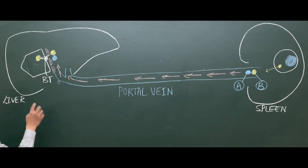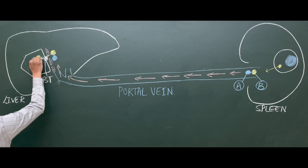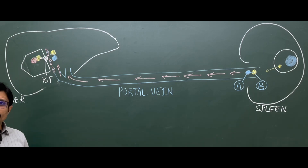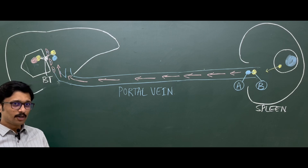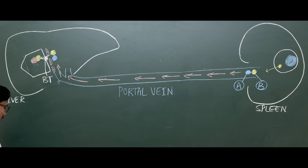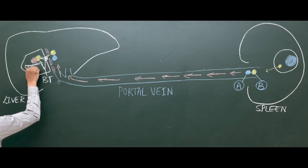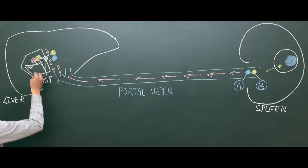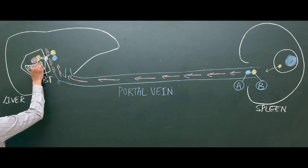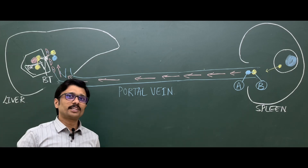Within the hepatocytes, once the bilirubin is taken inside, it is bound with one more protein molecule. This protein molecule binds to the bilirubin and keeps it within the cell so that it will not escape, and it also helps the bilirubin to enter the endoplasmic reticulum. The bilirubin can then enter the endoplasmic reticulum, where conjugation takes place.